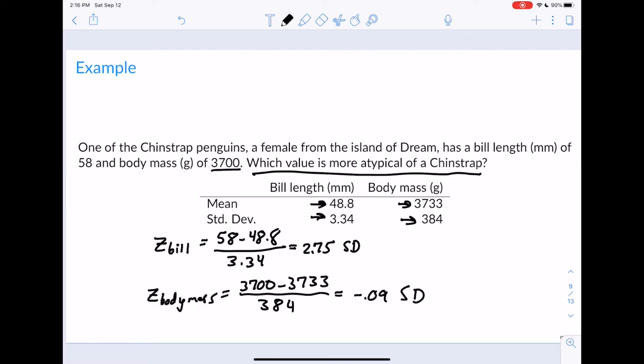So the question now, which value is more atypical? We're looking for the value that is largest in the absolute sense. In the absolute sense, for the bill length it would be 2.75. If we took the absolute value of negative 0.09, that would be 0.09. So clearly, her bill length is more atypical, is more unusual for a chinstrap penguin. Hopefully that makes sense to you. If you have any questions about that, please let me know.